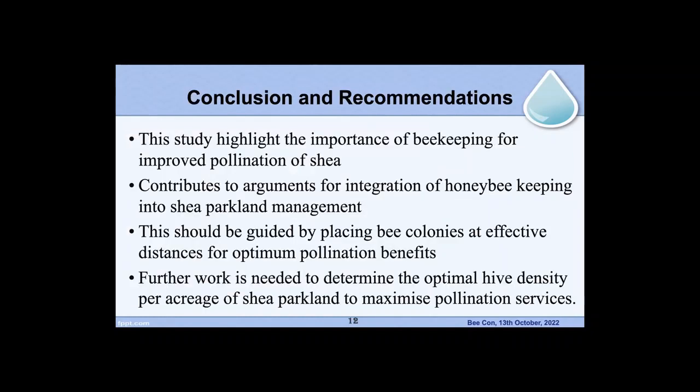This study highlights the importance of beekeeping for improved pollination of Shea. It also contributes to the argument for integration of honey beekeeping into Shea parkland management. This should be guided by placing bee colonies at effective distances for optimum pollination benefit. The gap identified in this research is what should be the hive density or apiary density per acreage of parkland to maximize pollination services.